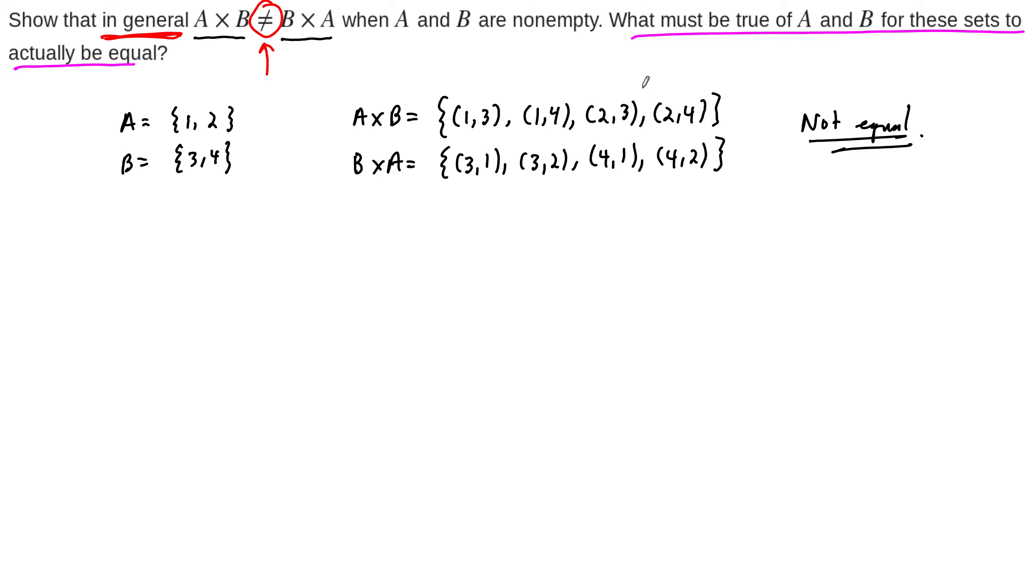Well, just looking at this, number one, they should have the same number of elements. Because when you reverse the order, then they have to have the same number of elements. So the cross products have to have the same number of elements.